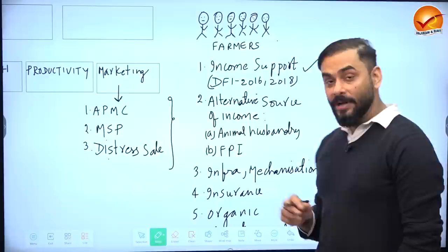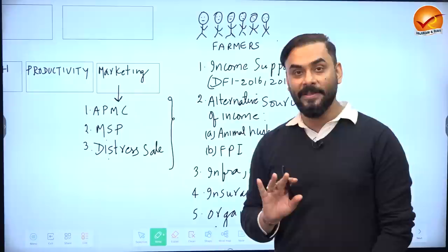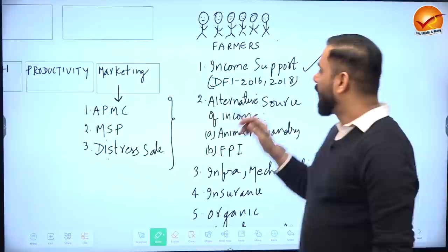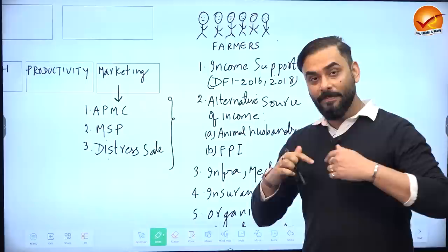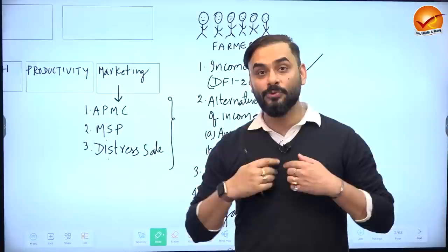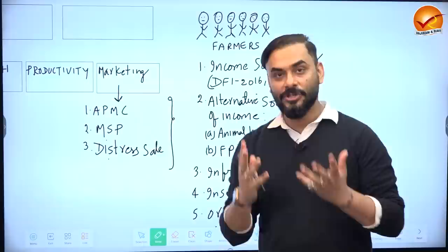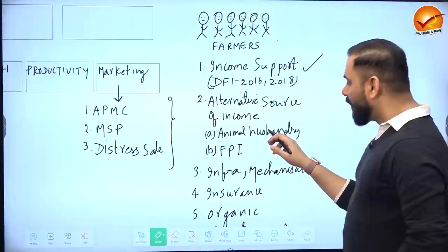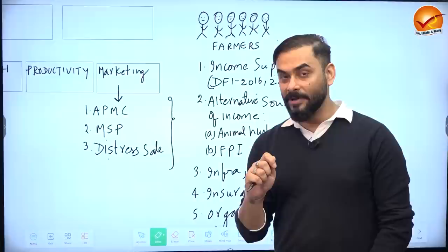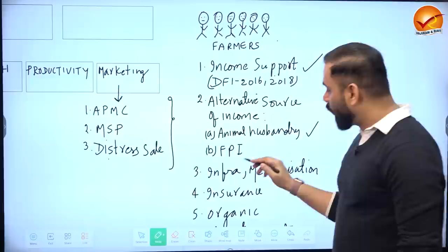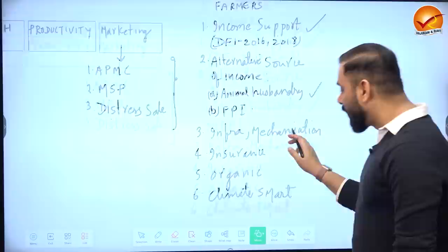Based on the Doubling Farmers' Income report, the government implemented many schemes — for example PM Kisan and changes to the Kisan Credit Card. Since farm sizes are small, we also need to provide alternate sources of income through animal husbandry — fish rearing, meat, eggs, etc. Food processing industry must also be promoted, because it provides employment support to farmers and helps reduce food wastage in India.